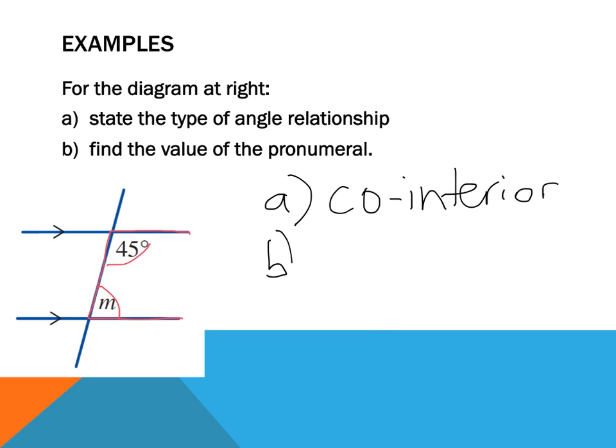Find the value. Now I know co-interior angles add up to 180, so I know that M is going to be 180 minus whatever the other angle is. In this case, it's 45. So M is going to equal 135 degrees.